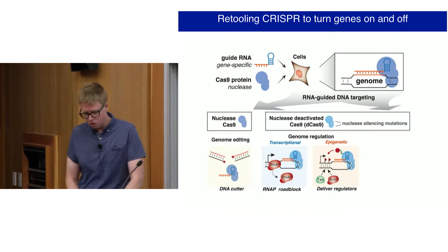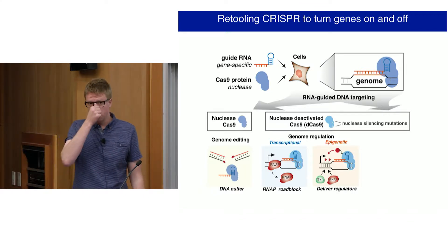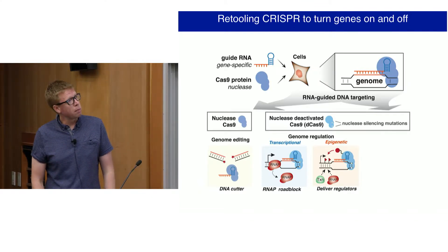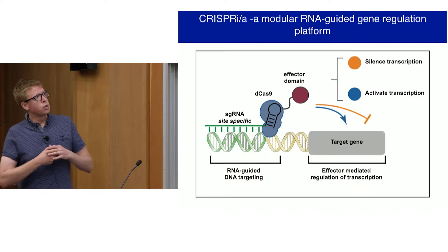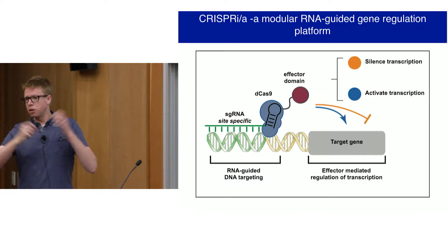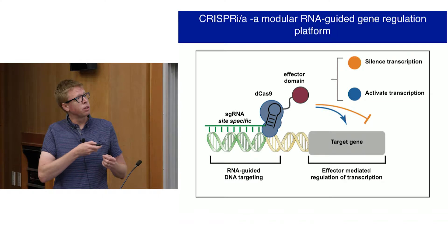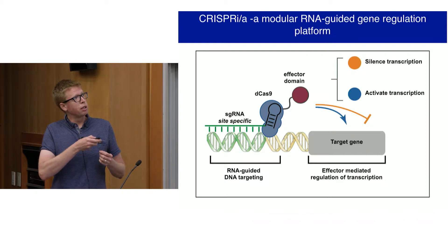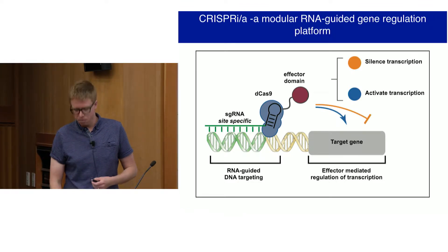Initially, we used dCas9 in bacteria by targeting this protein to specific sites along the genome to inhibit RNA polymerase elongation. This unfortunately does not work so well in human cells, so we've taken to appending additional domains to more robustly control transcription. Our goal early on, once we realized dCas9 alone didn't perturb transcription by much in human cells, was to ask whether we could append domains to either silence or activate transcription — creating an RNA-guided DNA binding platform with which we can fuse a variety of effector domains.